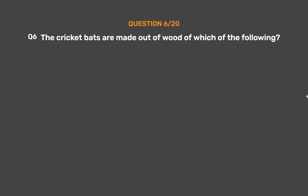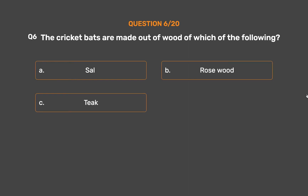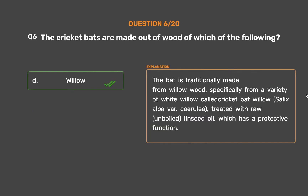Question number 6. The cricket bats are made out of wood of which of the following? Option A: Sal. Option B: Rosewood. Option C: Teak. Option D: Willow. The correct answer is Option D: Willow. The bat is traditionally made from willow wood, specifically from a variety of white willow called cricket bat willow, Salix alba var. caerulea, treated with raw, unboiled linseed oil, which has a protective function.